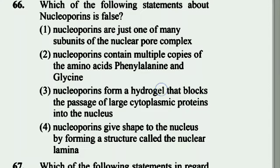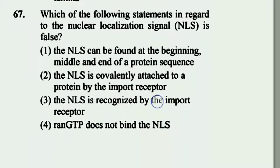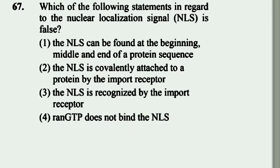Question 66: Which of the following statements about nuclear lamins is false? Option 4 is false: nuclear lamins give shape to the nucleus by forming a structure called the nuclear lamina. This is the false statement about nuclear lamins.